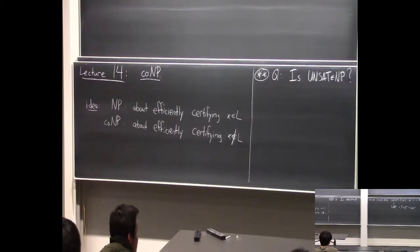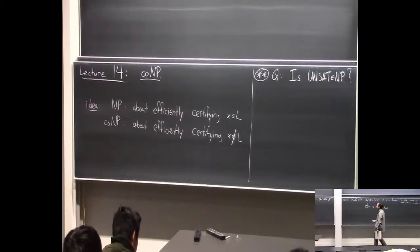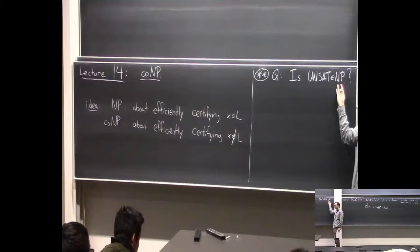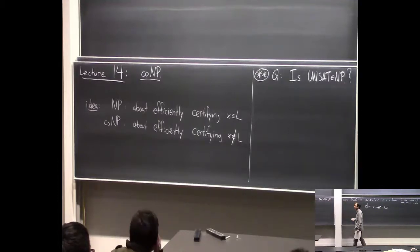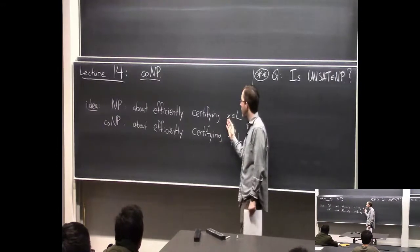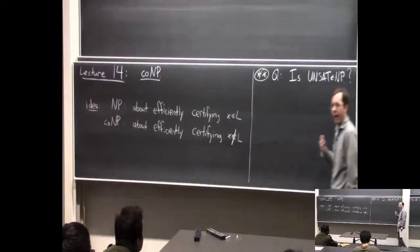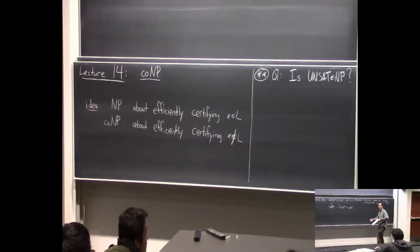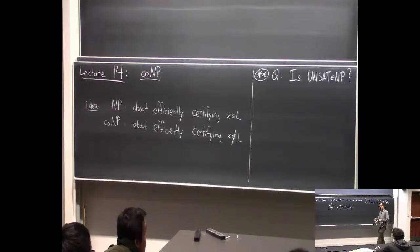This is what we're going to think about today. It arises as a question because if SAT is in NP, why is UNSAT not in NP? There's an asymmetry in the definition of NP: NP is all about certifying when a string is in the language. If the string is not in the language, the verifier doesn't have to become convinced that it's not in the language—the verifier only has to get convinced when the string is in the language.